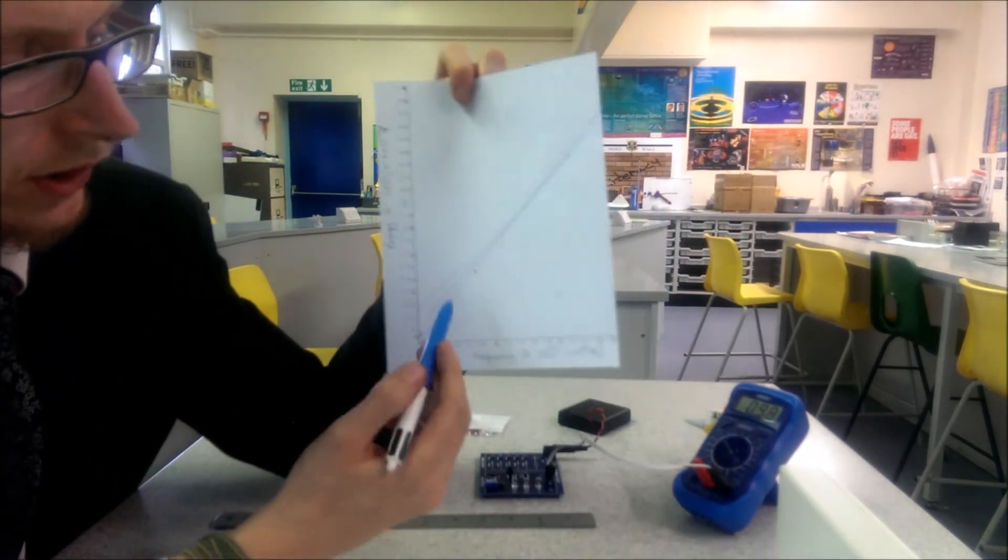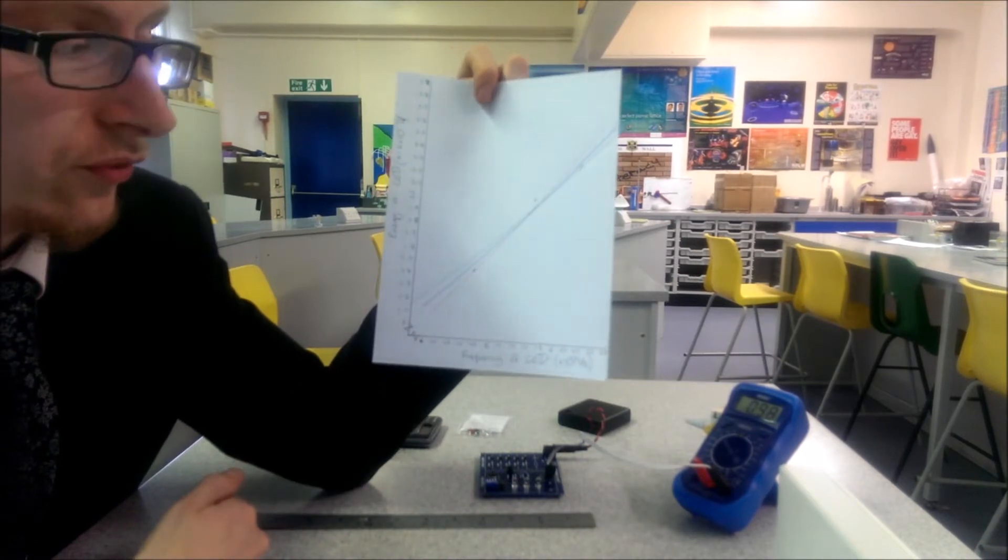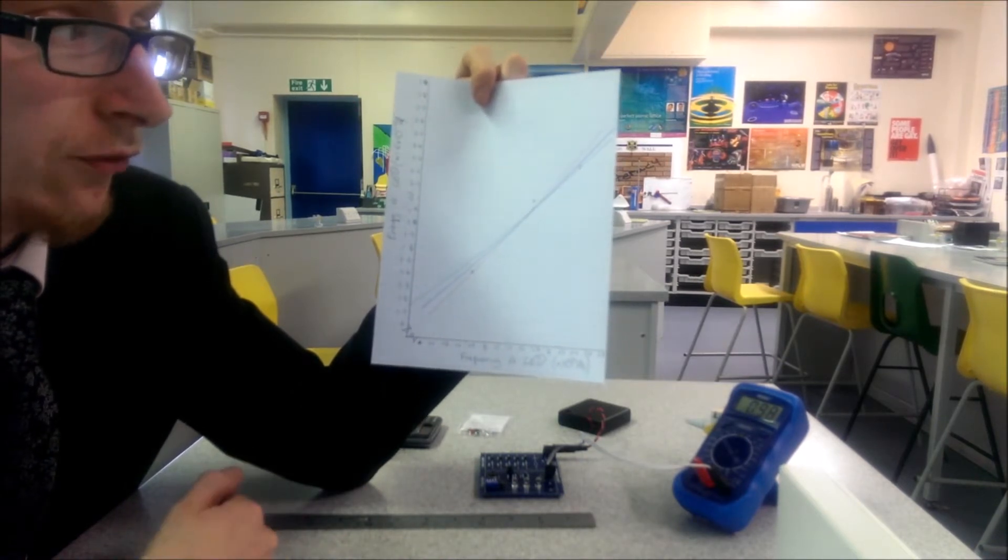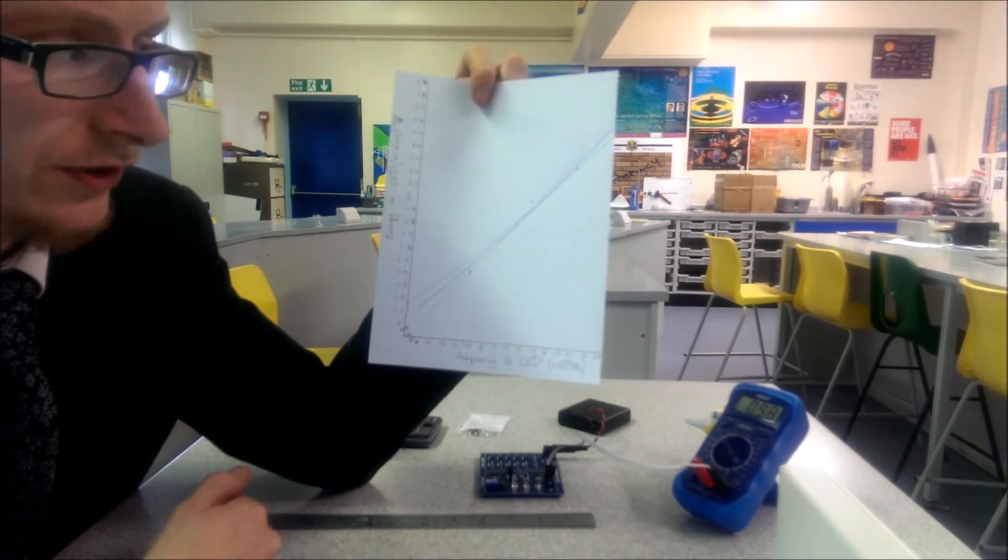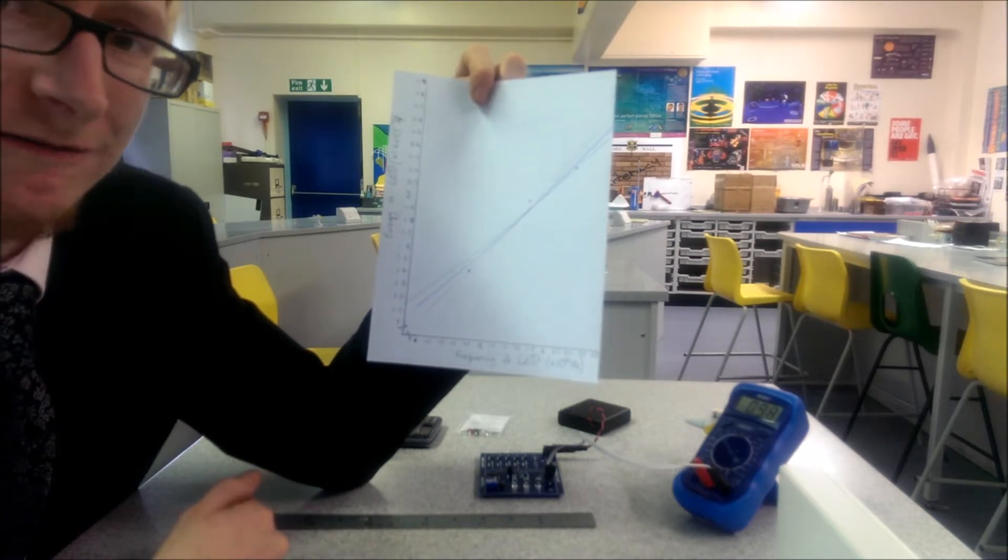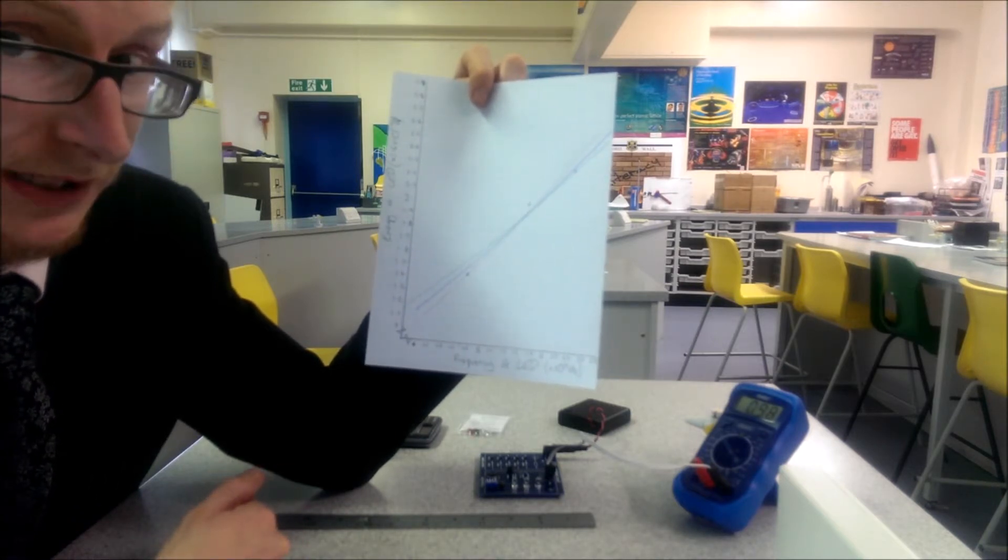I'm going to use the central line to calculate the gradient of the graph and therefore give me an estimate for Planck's constant. And one which should be a fairly accurate estimate.